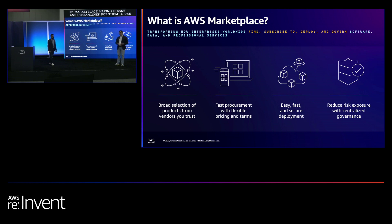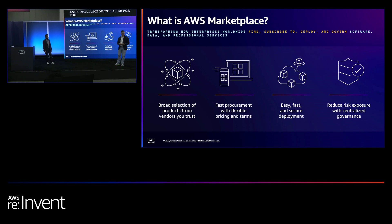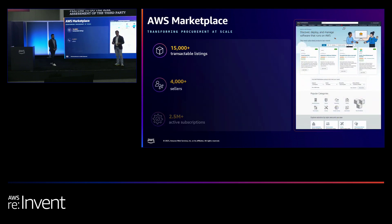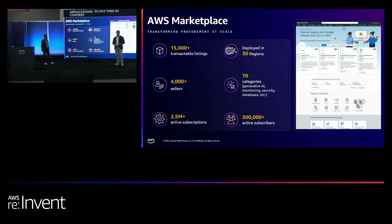That can simplify the procurement process and cut weeks off your procurement cycle when onboarding new vendors. Through many different deployment options, we enable your developers to get started with applications in just a matter of minutes. We also offer features to make governance and compliance much easier. IT and procurement admins can have a single pane of glass consolidated view on all agreements and all spend on third-party software bought from Marketplace. We were also the first Marketplace to introduce risk assessment of third-party applications. We've partnered with more than 4,000 sellers to offer over 15,000 products, and more than 300,000 AWS customers are using it on a daily basis.